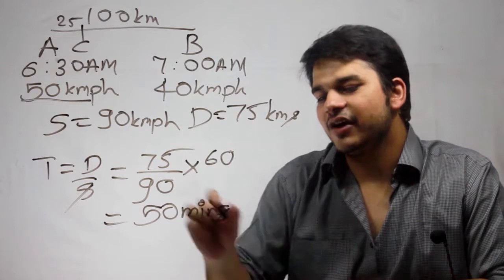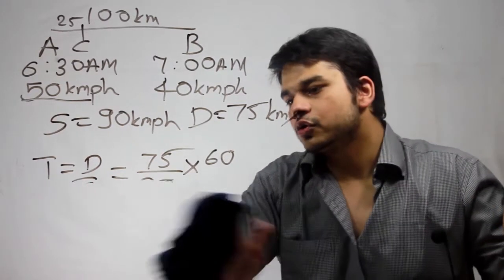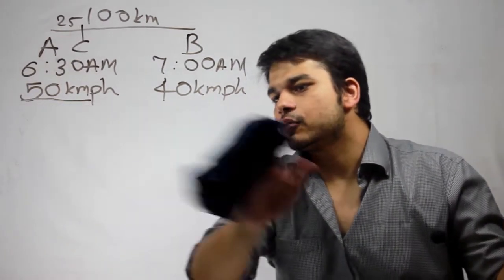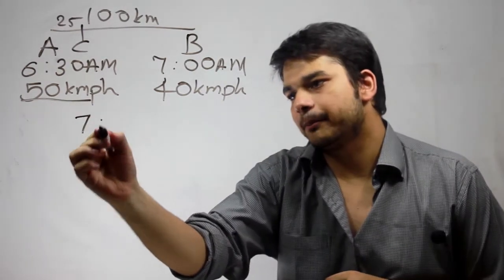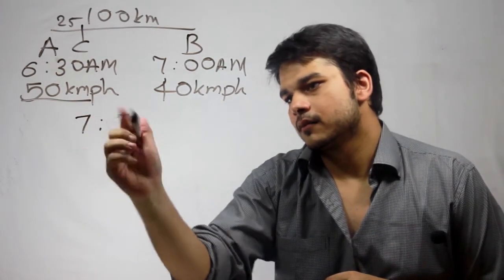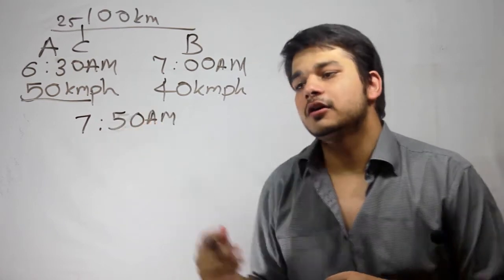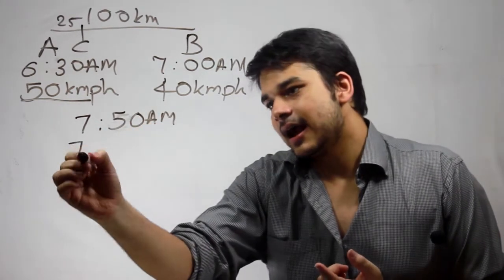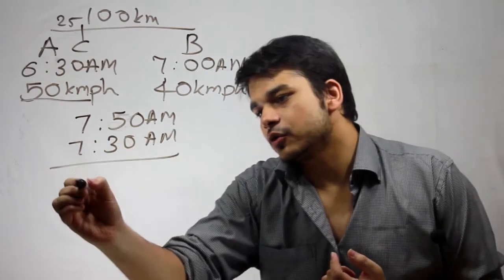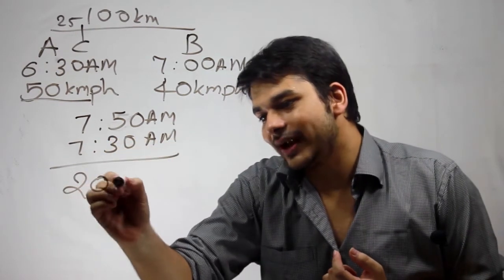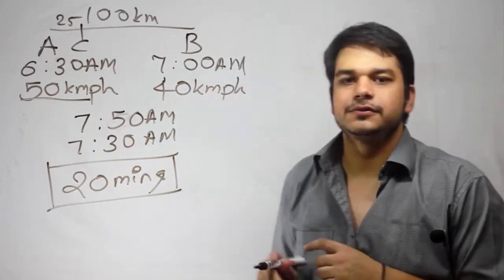This time is calculated after 7 o'clock, so the trains would collide at 7:50 AM. Since the controller realized this at 7:30 AM, he has 20 minutes to avoid the collision.